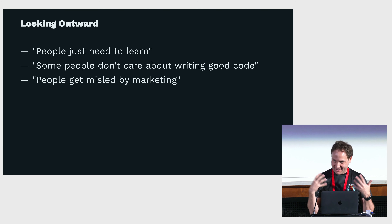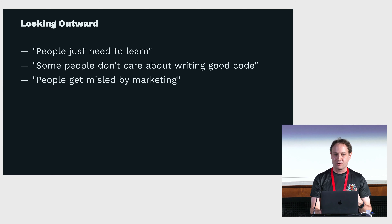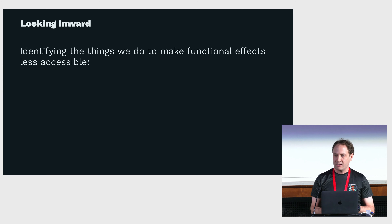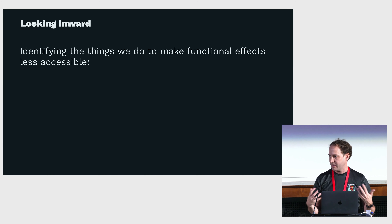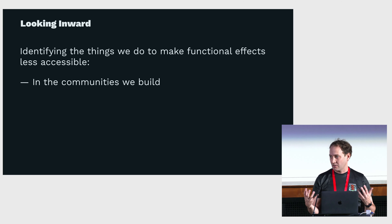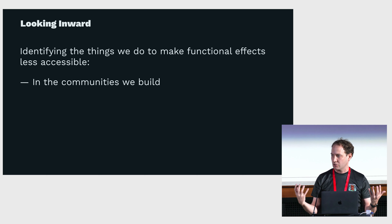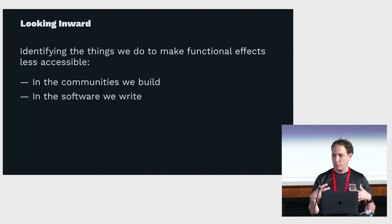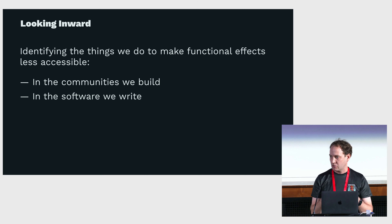But all of those really, going back to the relationship analogy, what leads to success is not blaming the other person but looking inward and asking: what did I do to contribute to this, and what can I do better? We can ask ourselves what we do when we create functional effect libraries that makes them less accessible — in two broad categories: the communities we build, and the software we write.